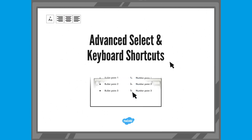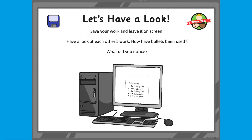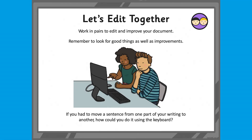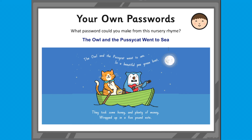Our simple to use and engaging PowerPoints make it easy to work through each skill, always providing children with the opportunity to practice. For example, in this presentation children are taught how to create a strong password and then asked to use this learning to create a password using the popular nursery rhyme 'The Owl and the Pussycat' to make it more accessible to them.